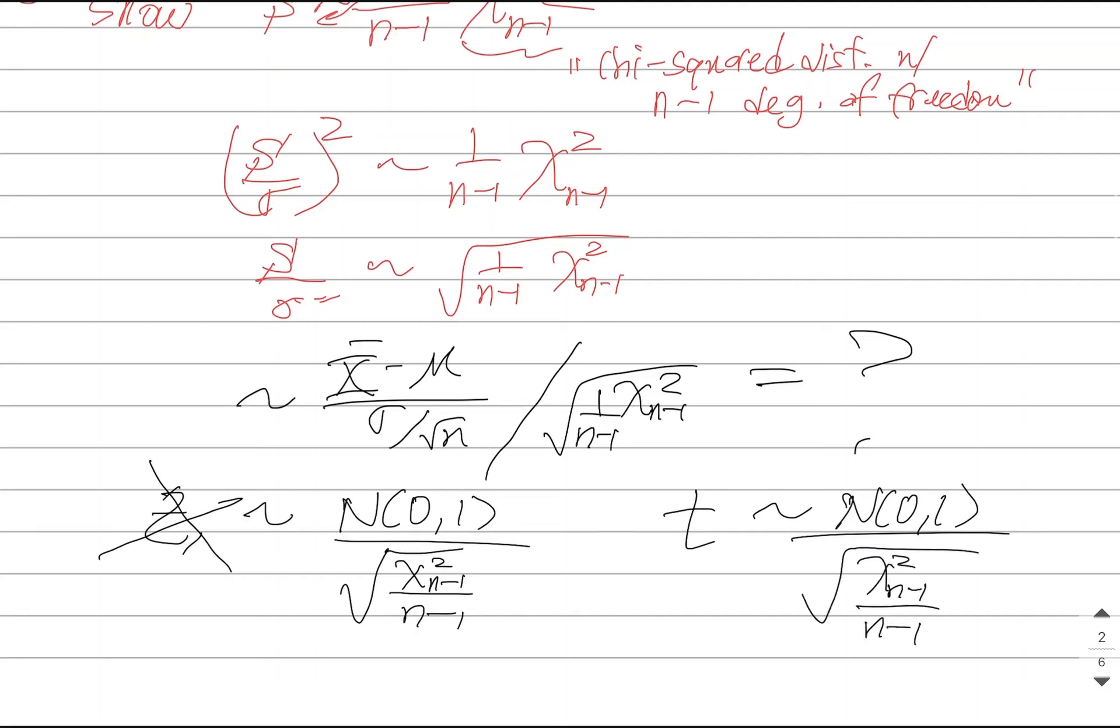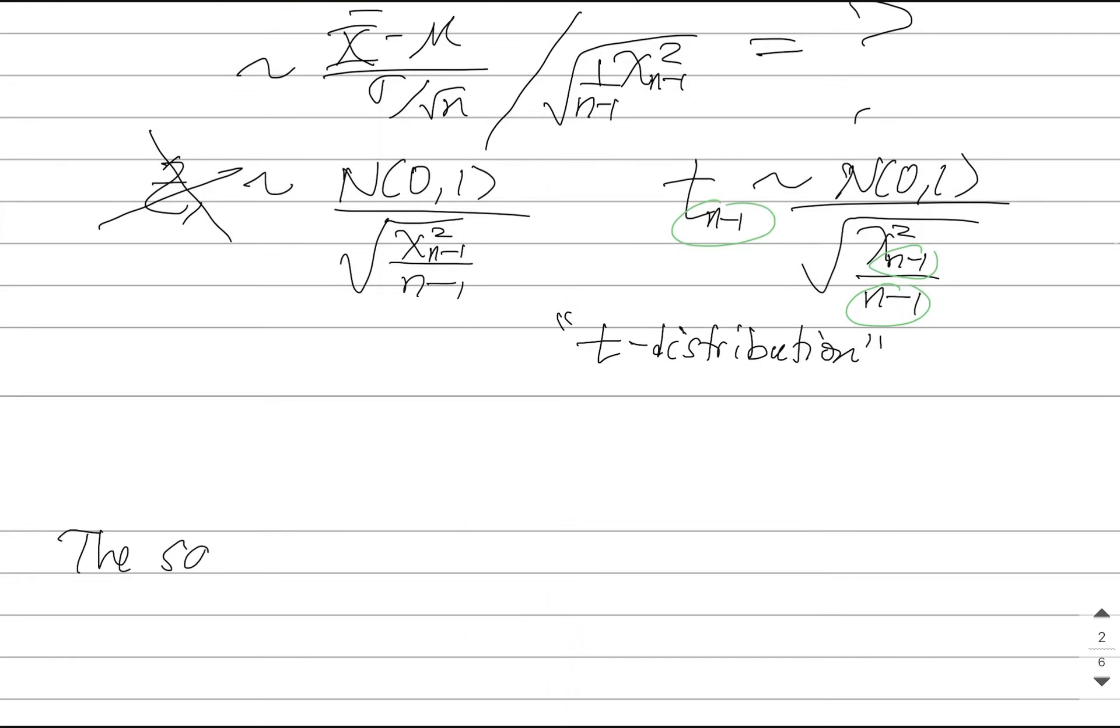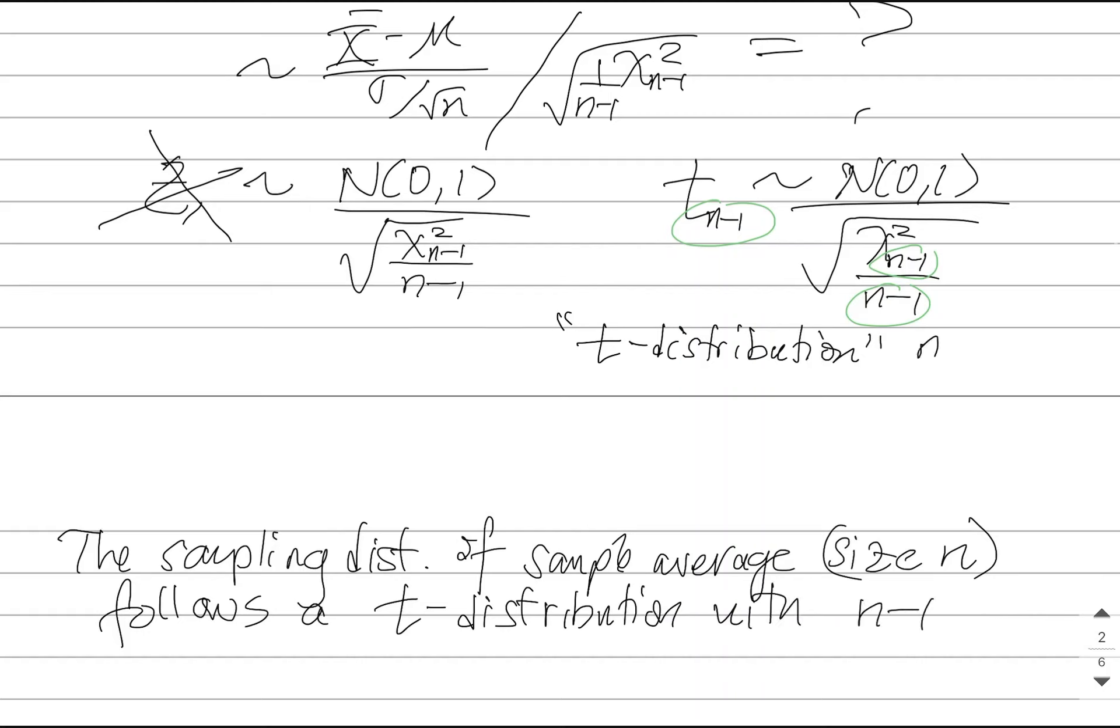And this is a new type of variable. Not only am I going to call it a T, I'm going to put reference to this value of n minus one. So this is something new. This is called a T distribution. So the sampling distribution of the sample average with size n follows a T distribution with what's called n minus one degrees of freedom.